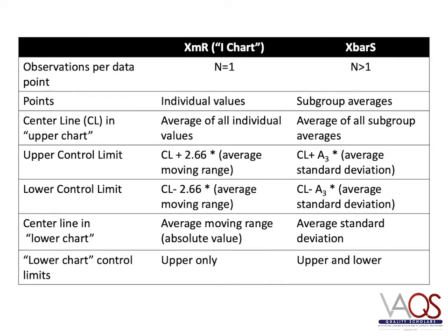As you recall from the Introduction to Statistical Process Control mini-module, the XMR chart consists of two charts: the X chart, which plots the data collected, and the moving range, or MR chart. The XMR chart is used when there is one observation per data point. On the X chart, each data point is the individual value of one observation and the center line is the mean, or average, of all the individual values. The control limits are calculated using the average from the X chart and the average moving range from the moving range chart. The moving range chart is created from the absolute value of the difference between successive data points on the X chart. Now, let's look at an XMR chart to review.